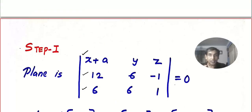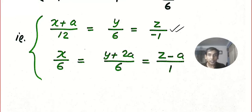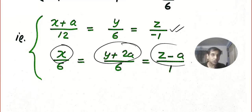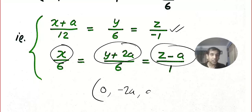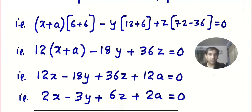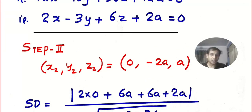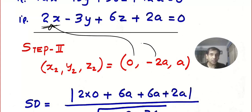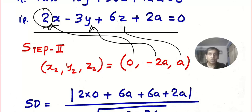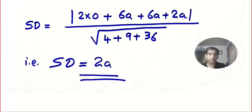Now look at the second equation: read the numerator to extract the point x₂, y₂, z₂ = (0, −2a, a). Then plug this into the plane equation: 2×0 − 3×(−2a) + 6×a + 2a, divided by √(2² + (−3)² + 6²). This gives 2a, which proves the result since it's a prove-that question.